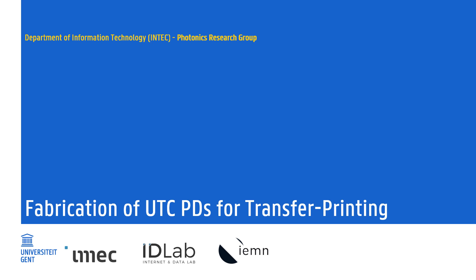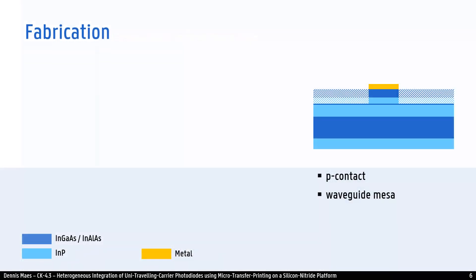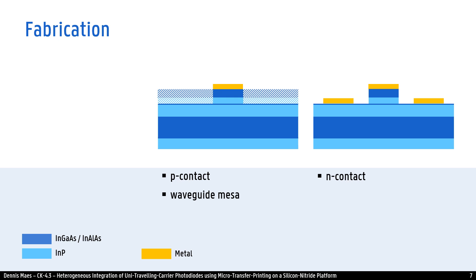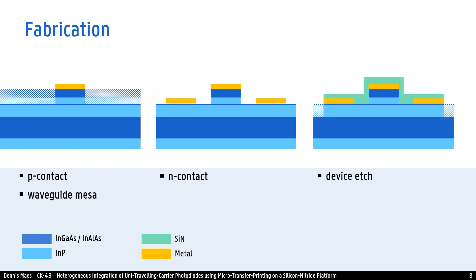This brings me to the fabrication of the UTC photodiodes for transfer printing on silicon nitride. The processing starts like regular III-V processing. A P-contact is made, the waveguide mesa is etched. Also the N-contact is deposited and the device itself is etched using a silicon nitride hard mask.